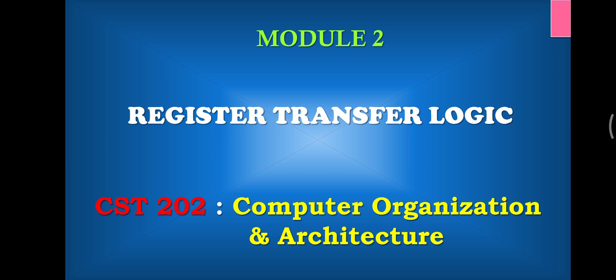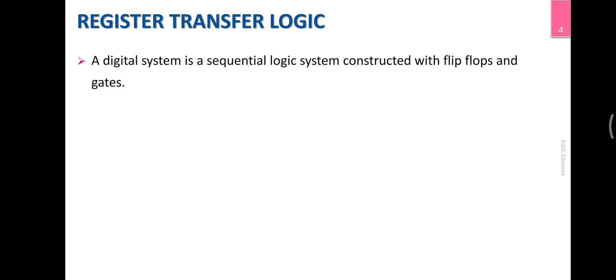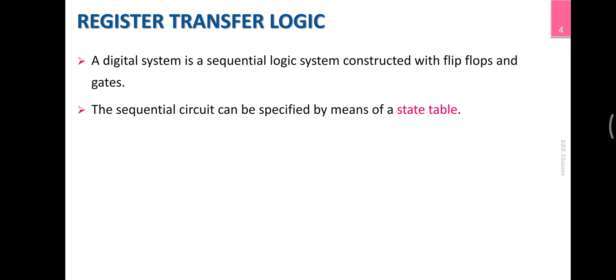Register transfer logic: there is no single application method for any process or operations or data. We have to design a digital system — a computer or a processor — which is ultimately a digital system with flip-flops, gates, etc. Whatever digital system we define, we have to design a table. For a combination circuit, we represent a truth table; we represent the sequential circuits.